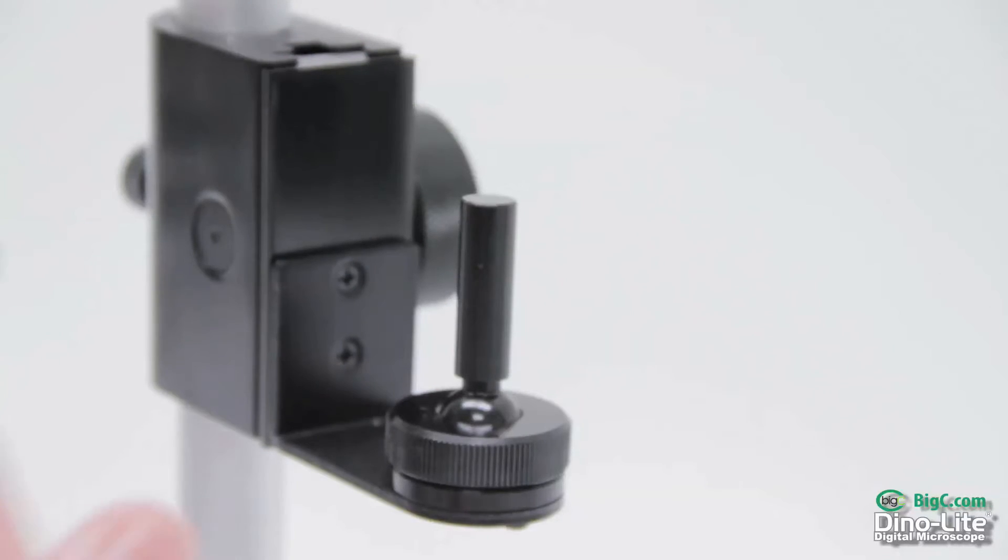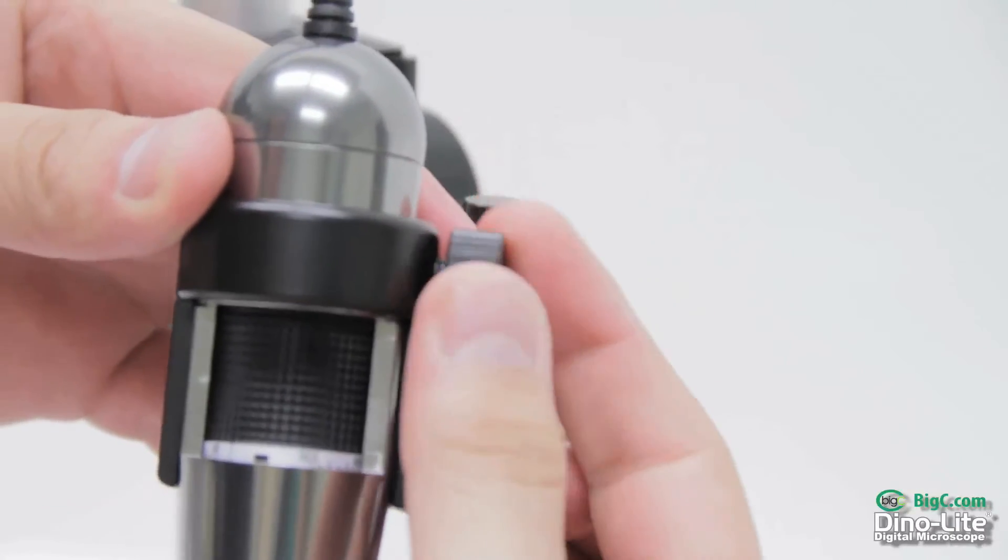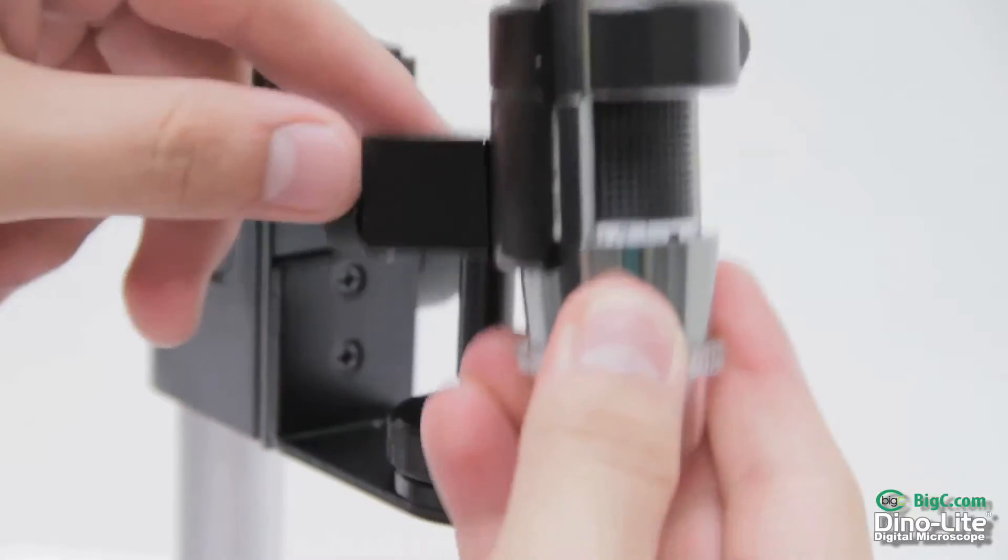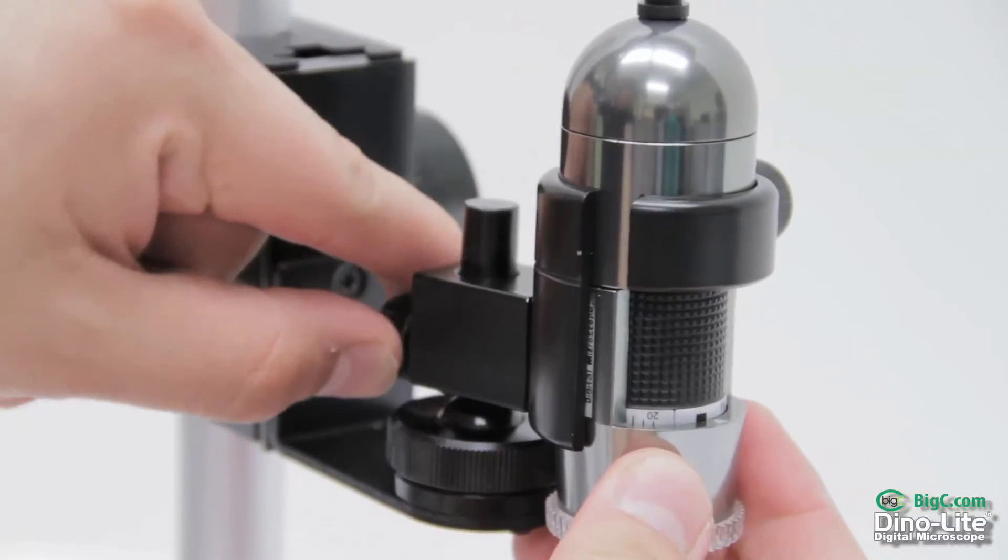Fourth on our list is the MSA2M. This model is the MSA2Z's big brother. It consists of all metal and has a fastening set screw to hold the scope in place.